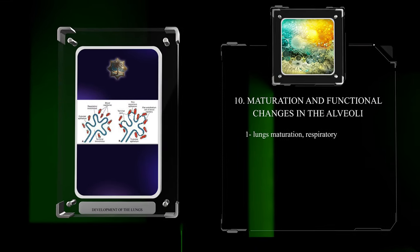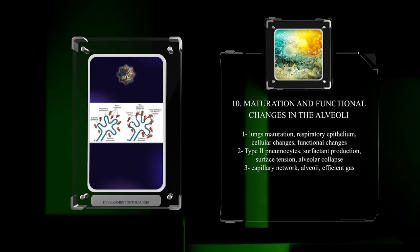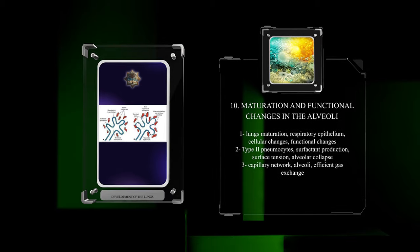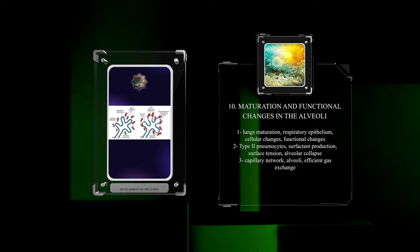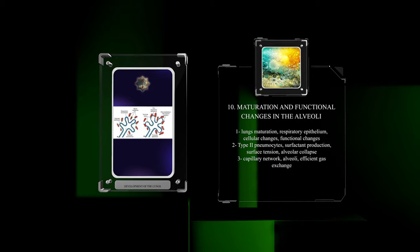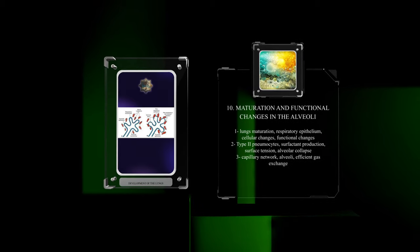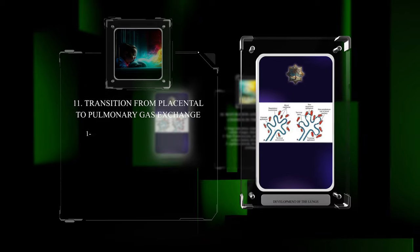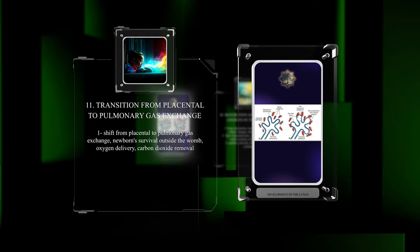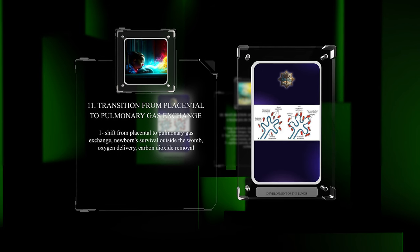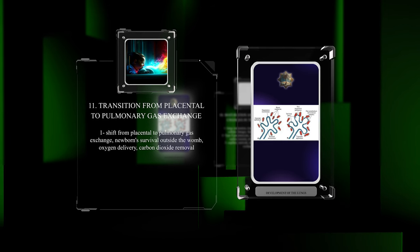After birth, the lungs undergo further maturation as the respiratory epithelium experiences cellular and functional changes. Type 2 pneumocytes mature and produce surfactant, reducing surface tension and preventing alveolar collapse. The capillary network surrounding the alveoli matures, allowing for efficient gas exchange. This shift from placental to pulmonary gas exchange is crucial for the newborn's survival outside the womb, as it ensures the delivery of oxygen to the body's tissues and the removal of carbon dioxide waste.